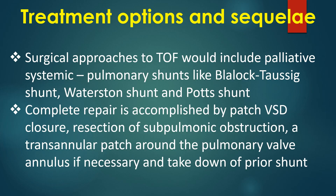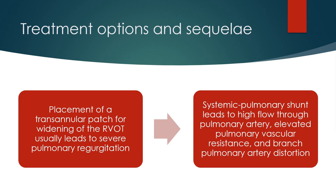Surgical approaches to TOF include palliative systemic-pulmonary shunts like the Blalock-Taussig shunt, Waterston shunt, and Potts shunt. Complete repair is accomplished by patch VSD closure, resection of the sub-pulmonic obstruction, a trans-annular patch around the pulmonary valve annulus if necessary, and takedown of a prior shunt. Placement of a trans-annular patch for widening of the RVOT usually leads to severe pulmonary regurgitation. Systemic-pulmonary shunts lead to high flow through the pulmonary artery, elevated pulmonary vascular resistance, and branch pulmonary artery distortion.